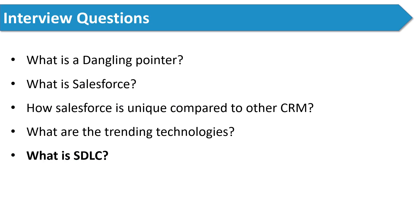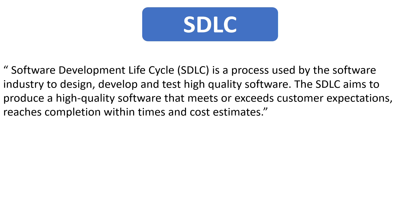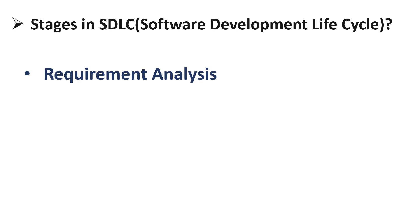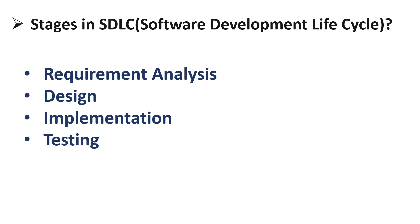The next question was: what is SDLC? You can answer: Software Development Life Cycle (SDLC) is a process used by the software industry to design, develop, and test high-quality software. The SDLC aims to produce software that meets customer expectations within time and cost estimates. There are six major stages: requirement analysis, design, implementation, testing, development, and maintenance.